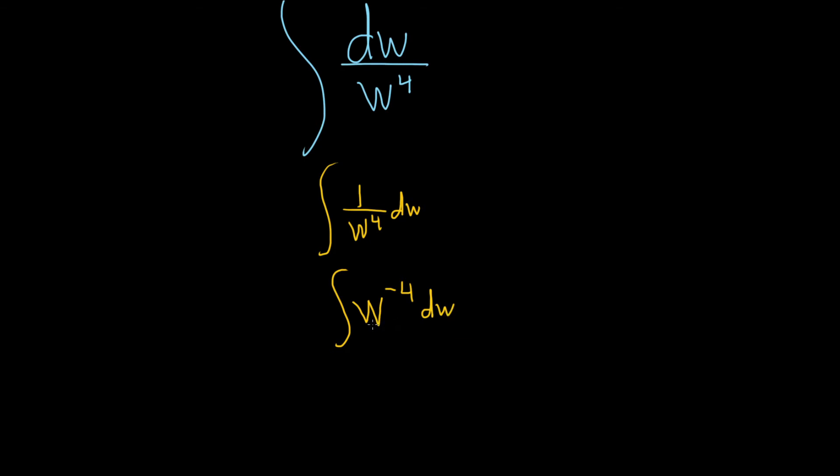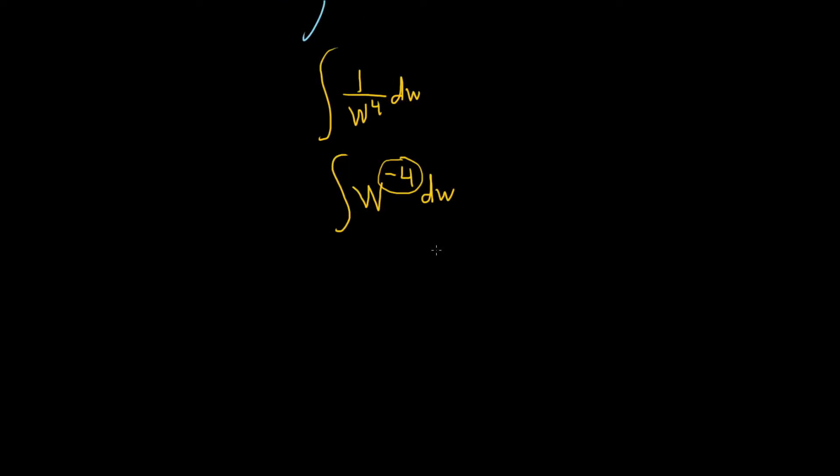And so now we can use what's called the power rule. The power rule just says we take this number here, the negative 4, and we add 1 to it. So we get W. So you add 1 to it, so you get negative 3. And then you're supposed to divide by the result. So then you divide by negative 3.